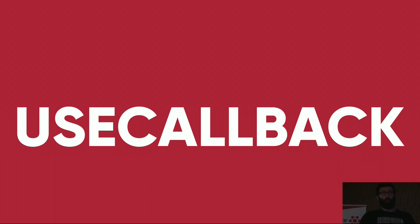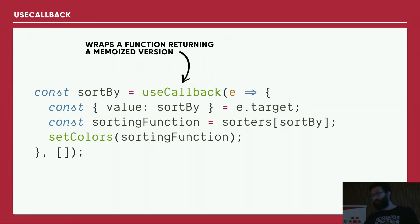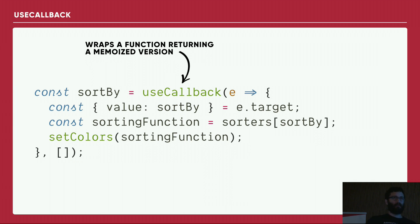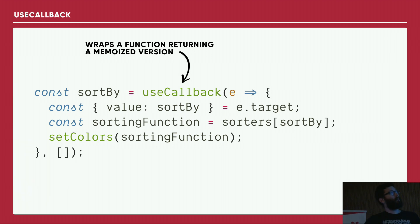The second hook we saw is `useCallback`. As mentioned, `useCallback` is used to memoize a function. What that means is that every time a render is triggered, you're not going to get a new function defined from scratch every time — which would re-render child components that receive it as a prop, since props changes trigger re-renders. Memoizing the function means the same function reference is passed down consistently.